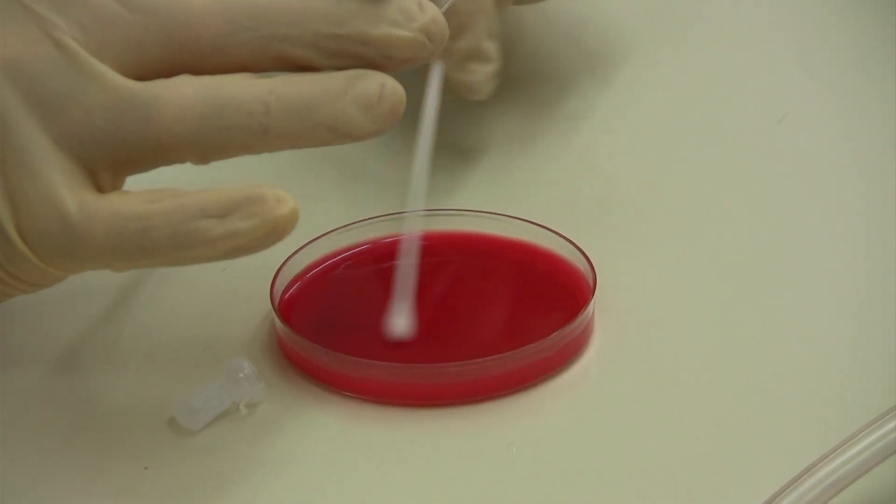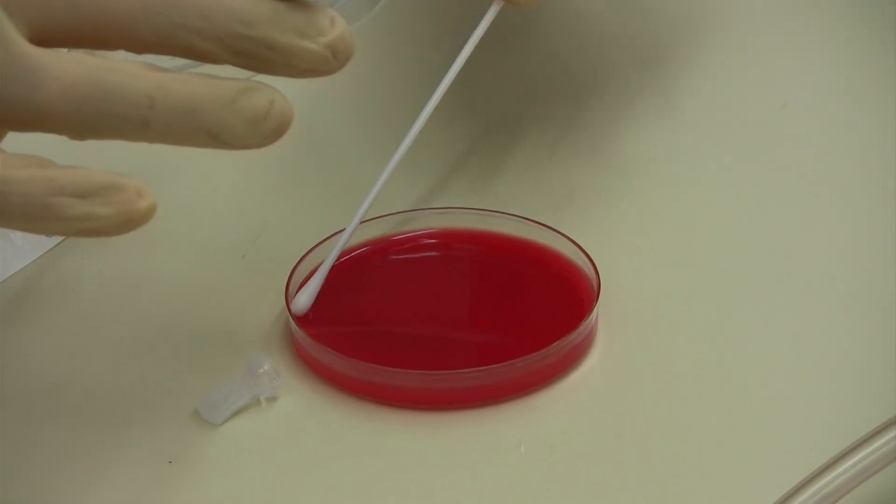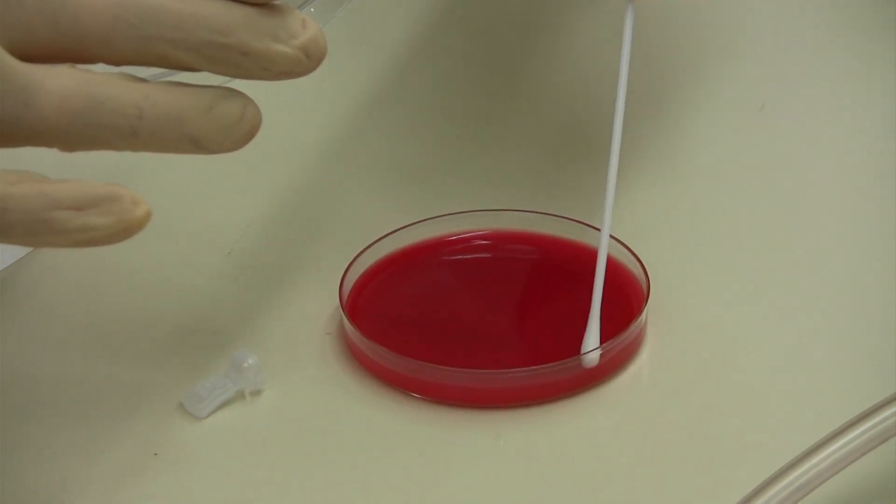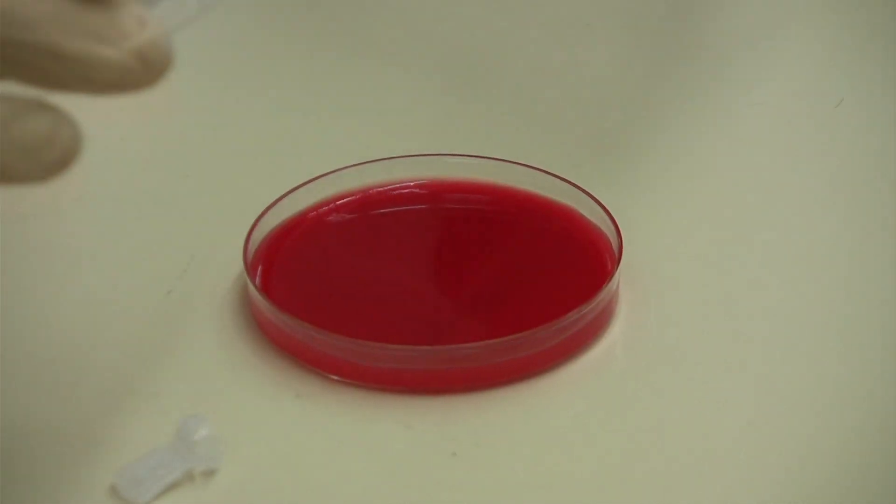Once you do that swabbing, you want to wring the edge of the agar plate with the swab so that the growth goes right up to the edge of the agar, like so.